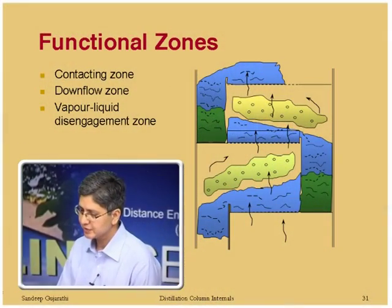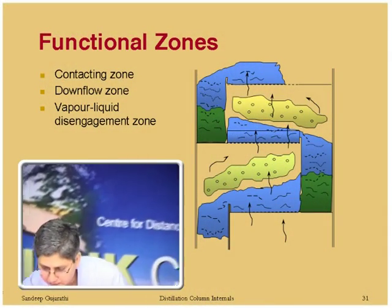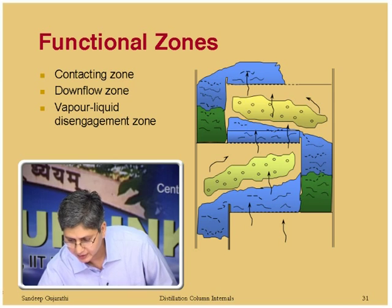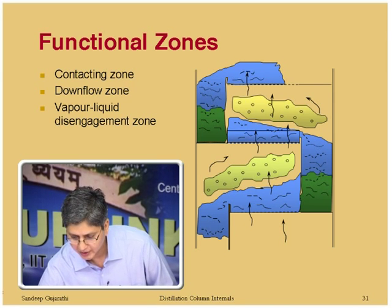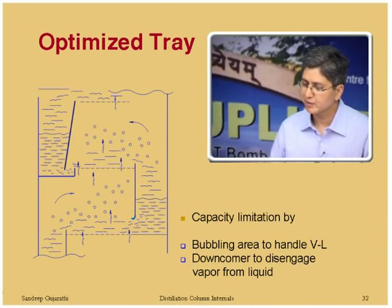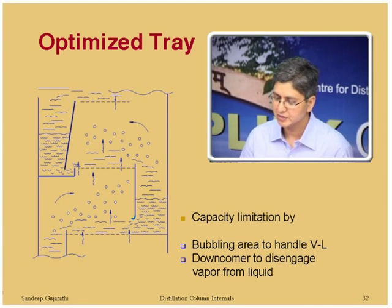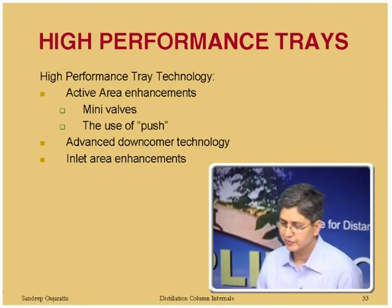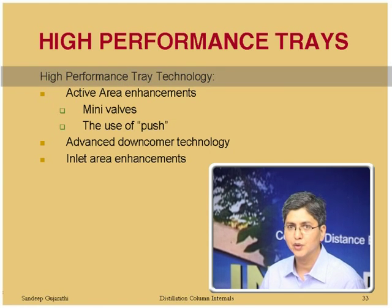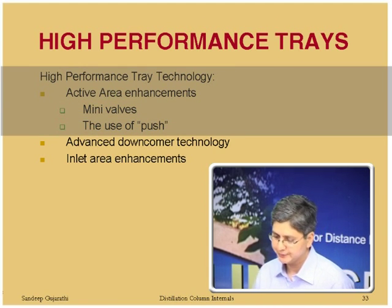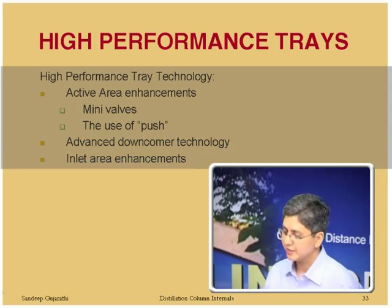High performance trays were developed when technologies emerged to increase the active area, enhance efficiency using mini valves and push technology, and through advanced downcomer technology and inlet area enhancements. Capacity limitation is either by bubbling area or by downcomer capacity for disengaging vapor and liquid. High performance trays addressed both these limitations simultaneously.